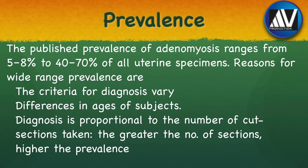The published prevalence of adenomyosis ranges from 5–8% to 40–70% of all uterine specimens. It must be noted that this is the prevalence in pathological uterine specimens and not in the general female population. The reasons for this wide range of prevalence are: first, the criteria for diagnosis vary; second, there are differences in the ages of subjects; and third, diagnosis is proportional to the number of cut sections taken — the greater the number of sections, the higher the prevalence.